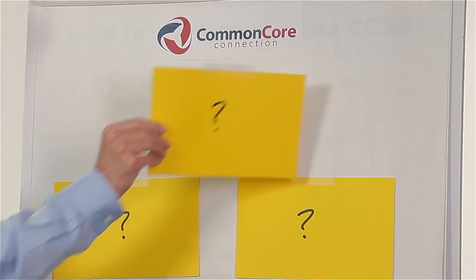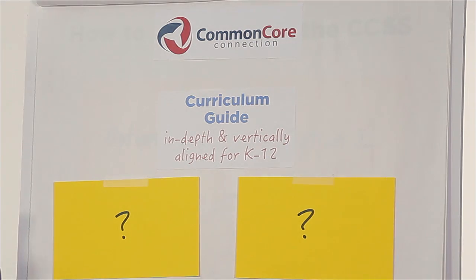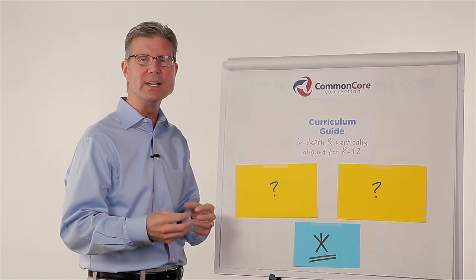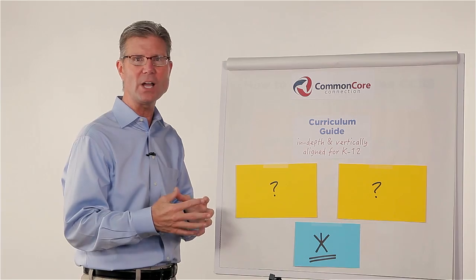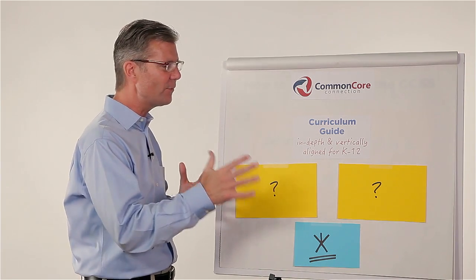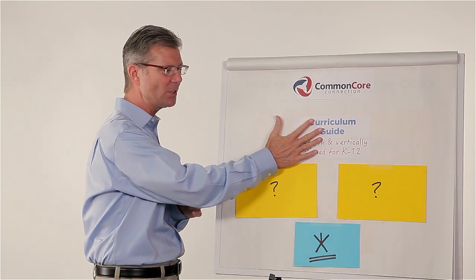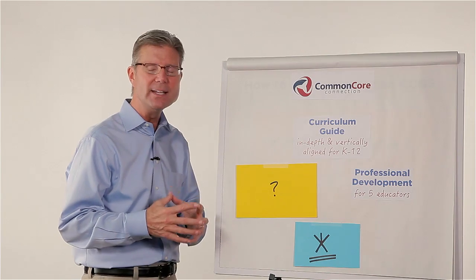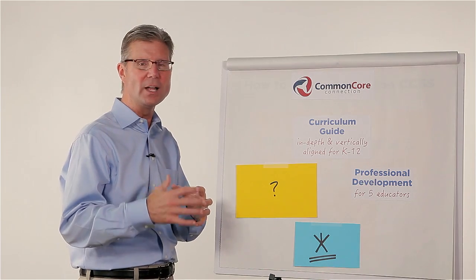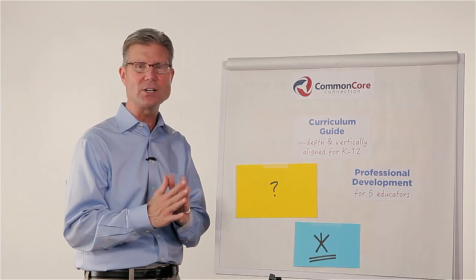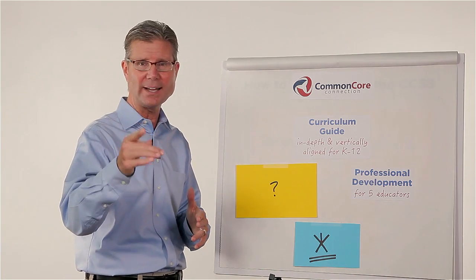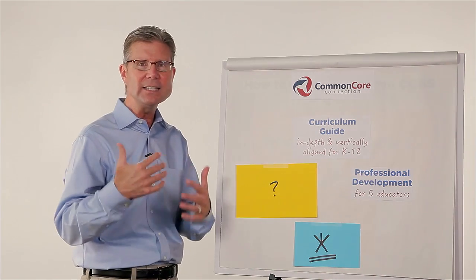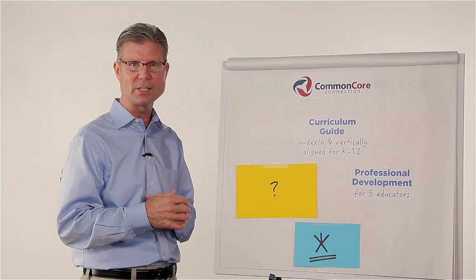How do we do that? We start with a curriculum guide — an action plan and a roadmap. Our curriculum guide, in-depth and vertically aligned K through 12, is the best tool we can offer to help you reach your objectives and fulfill your vision. This is the trail guide, but you're going to need trail leaders to guide you on that path. So we're going to do professional development — an intense pouring into five of your most action-minded leaders, the educators you select who are committed to this process. We're going to pour into them so they can be the trail leaders on this path, leading and educating others in your district along the way.